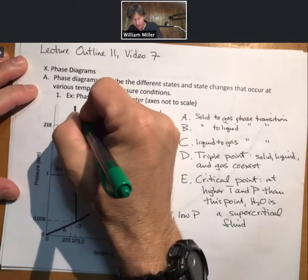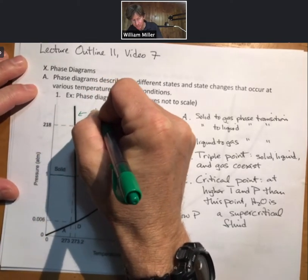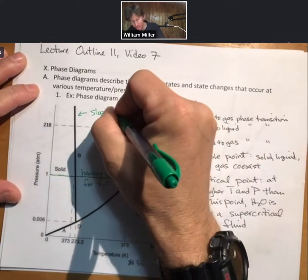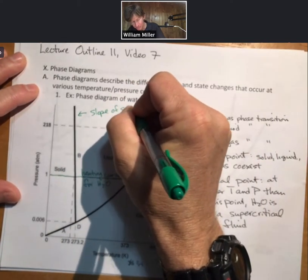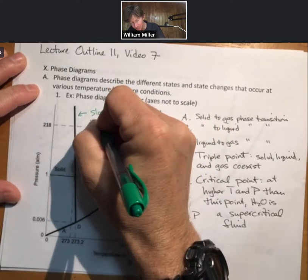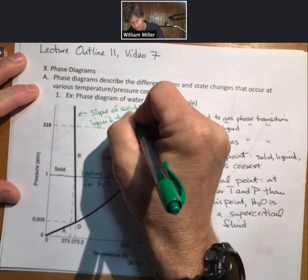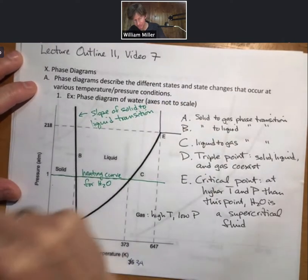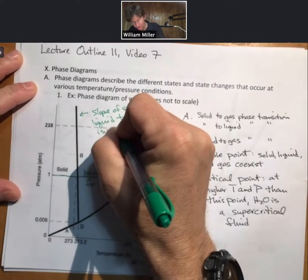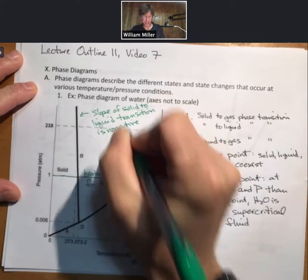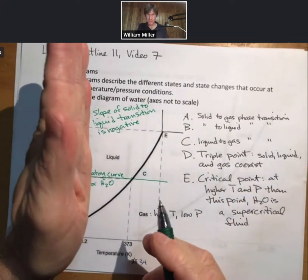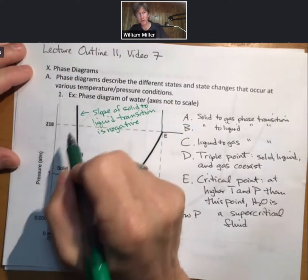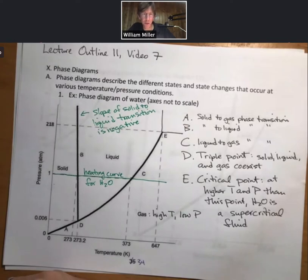The other thing that's interesting about this is that the slope of the solid to liquid transition is negative, as opposed to a positive slope. Water is almost the only substance we know of that has a negative slope here.